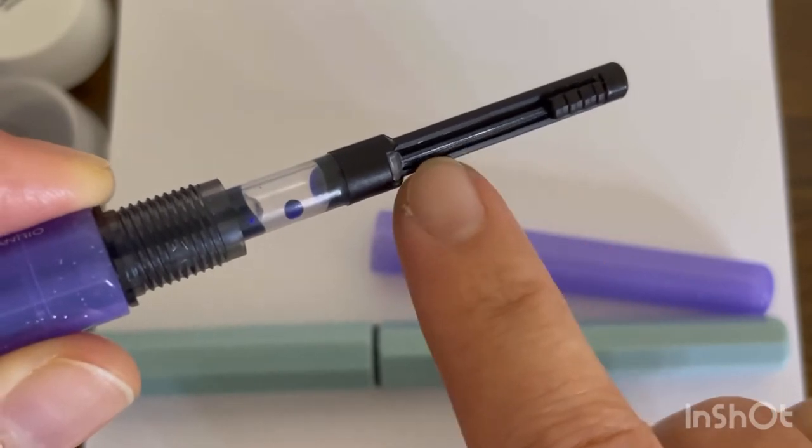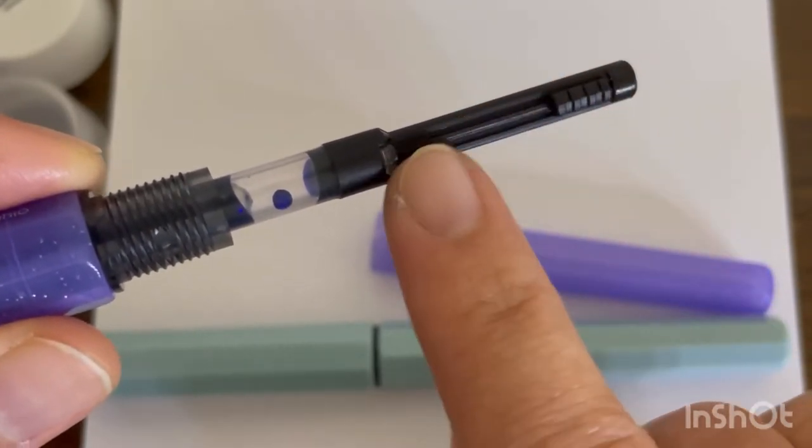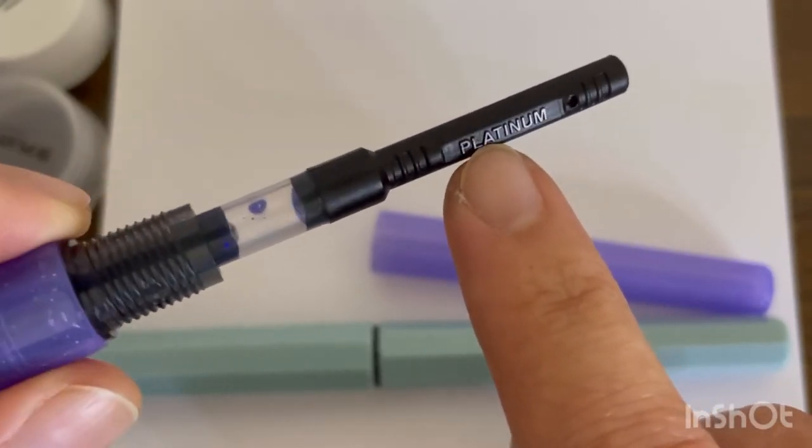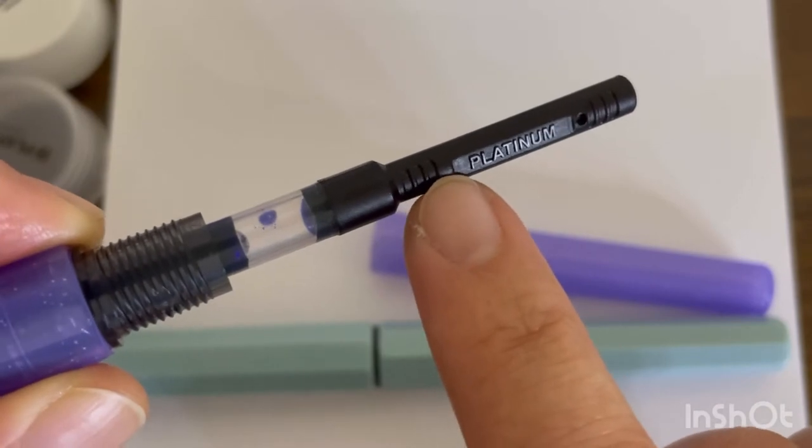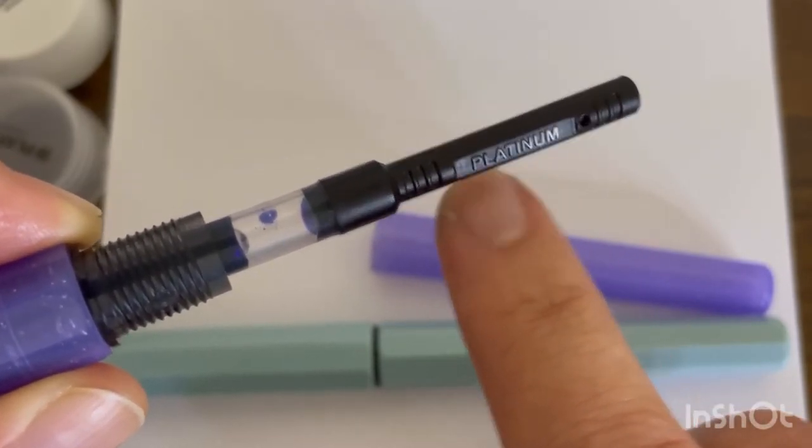You slide it down and up so that way you can draw the ink from your ink bottle. Over here on the other side you have that Platinum logo in there.